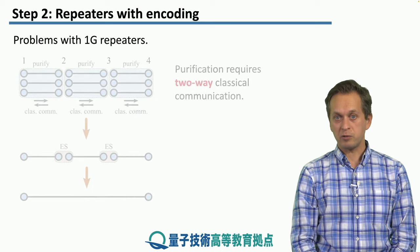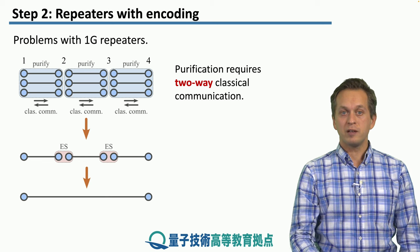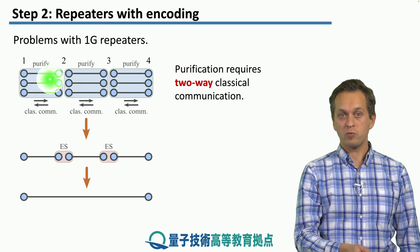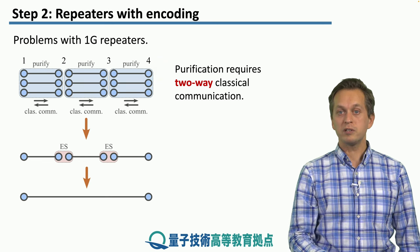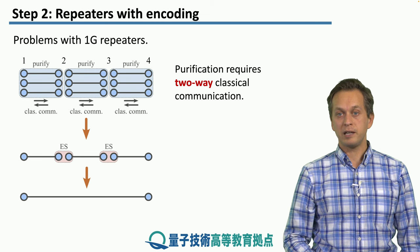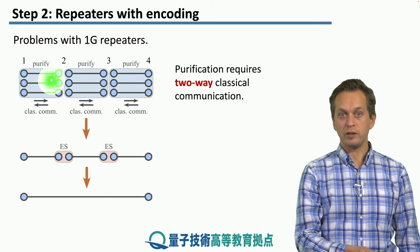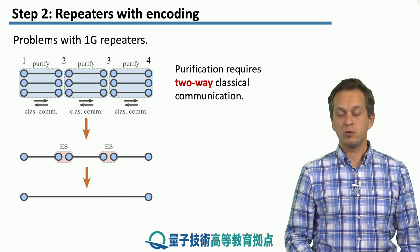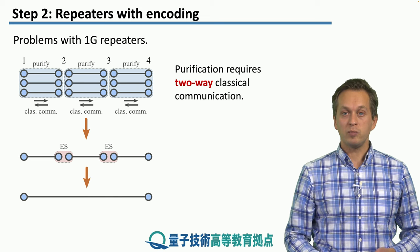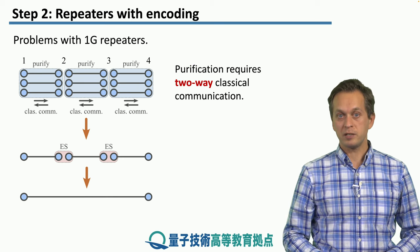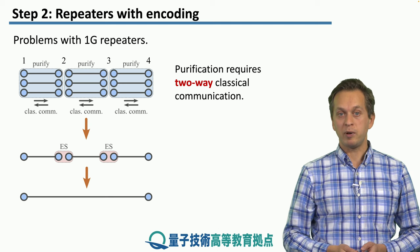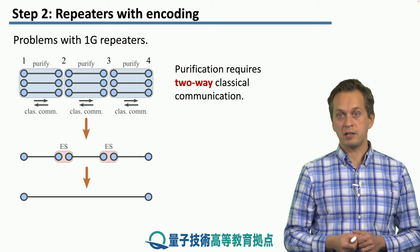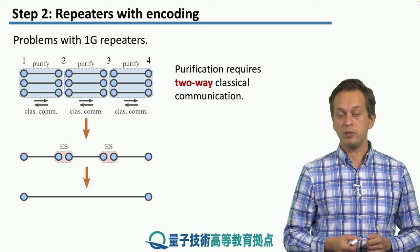To remind you what the scheme looks like, if we have four nodes 1, 2, 3 and 4, first we need to establish link-level base pair entangled pairs between 1 and 2, 2 and 3, 3 and 4. And in order to manage errors, we need multiple copies of these entangled pairs in order to purify them and increase their fidelity before we can apply entanglement swapping and stretch the entanglement to reach from node 1 to node 4.